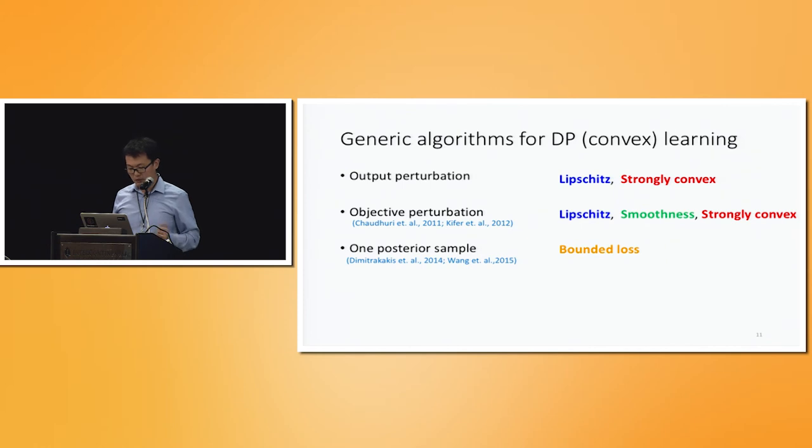So this managed to break most of the generic differentially private learning algorithms for solving differentially private convex optimization and differentially private empirical risk minimization. Okay. Because, for instance, in output perturbation, we need Lipschitz and strong convexity. In objective perturbation, we need Lipschitzness, smoothness and strong convexity. And in posterior sampling, so this is just to get a sample from a posterior distribution. And when the loss is bounded, you can show that this is differentially private. We also don't have boundedness in the loss.